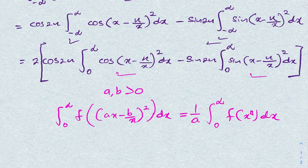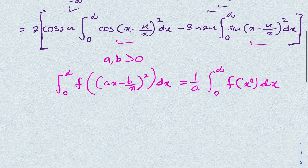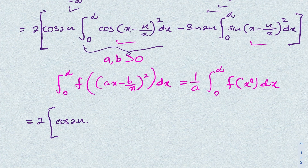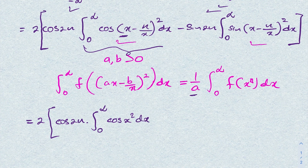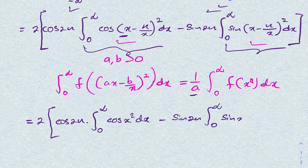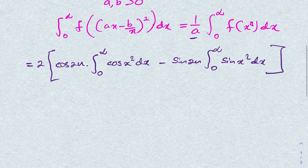Applying the Cauchy-Schlömilch transformation — where a = 1, so the factor is 1 — our integral becomes: 2cosine(2n) times the integral from zero to infinity of cosine(x²) dx, minus 2sine(2n) times the integral from zero to infinity of sine(x²) dx. These are the well-known Fresnel integrals, which we have evaluated in previous videos using two or three different methods.